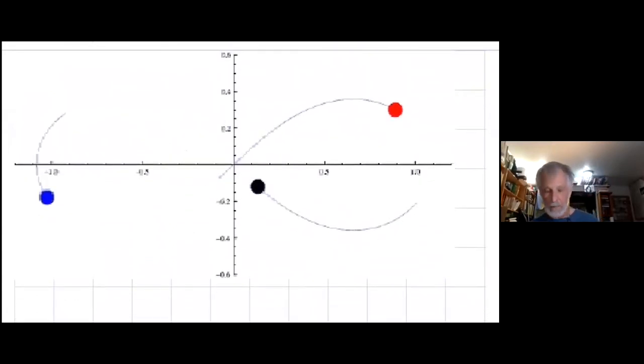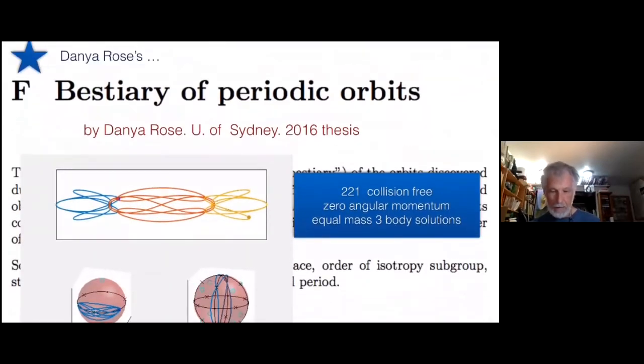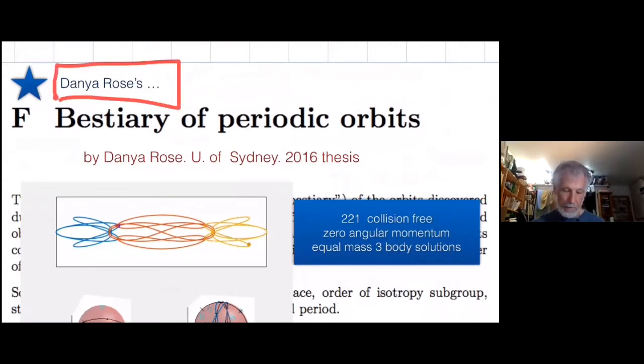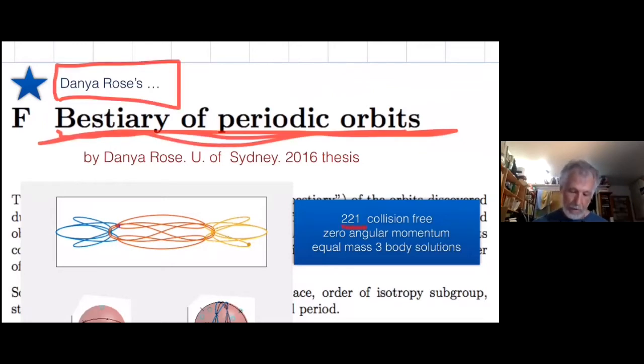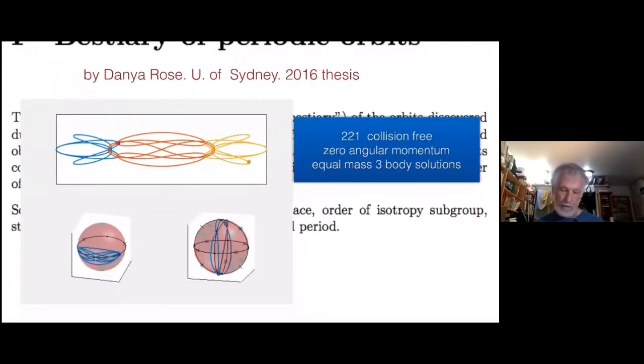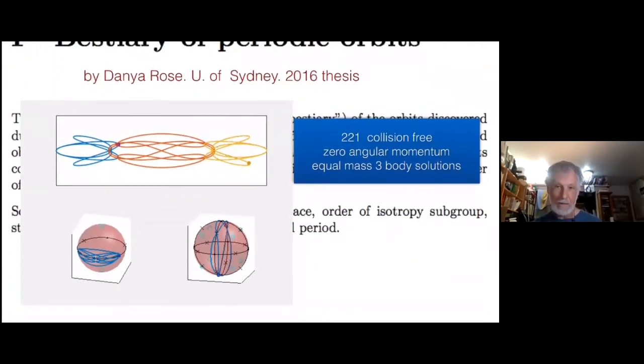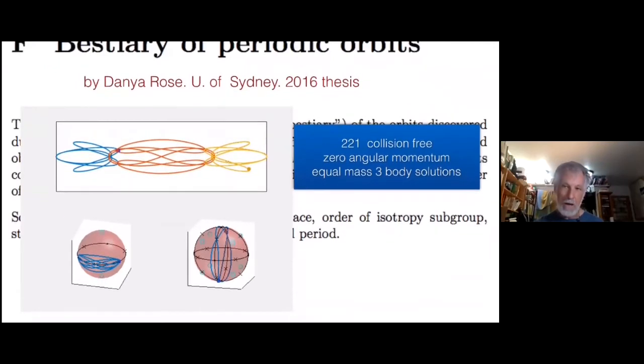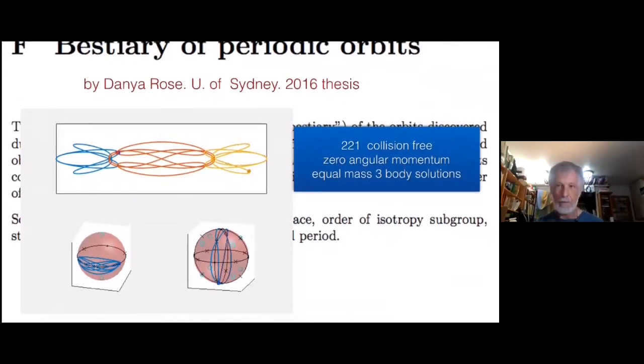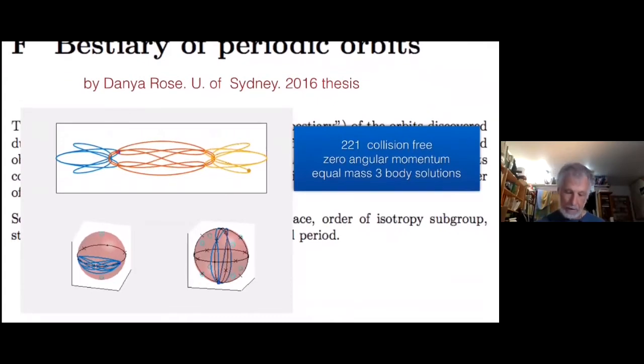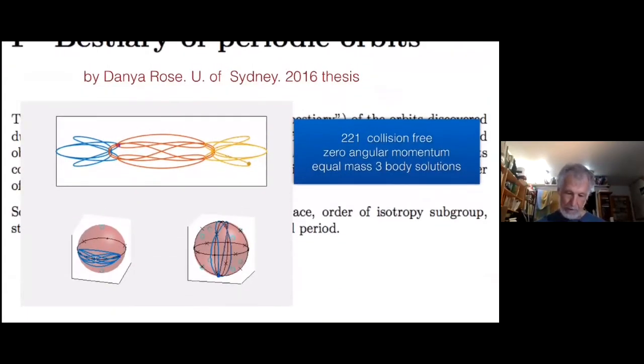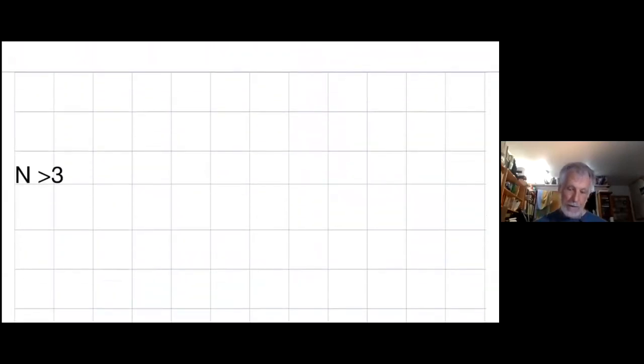So I got obsessed by the zero angular momentum three-body problem. And Daniel Rose under Holger Dullin wrote this beautiful thesis. There's an appendix that's just a kind of gold mine of data. He calls it a bestiary of periodic orbits. He has over 200 collision-free zero angular momentum, equal mass three-body solutions there. And there's just a ton of data that's left unmined. I think there's a lot of interesting theorems and conjectures that one could uncover.